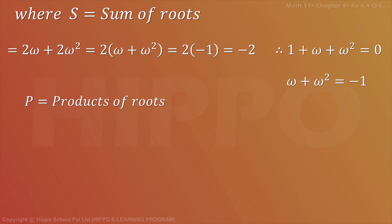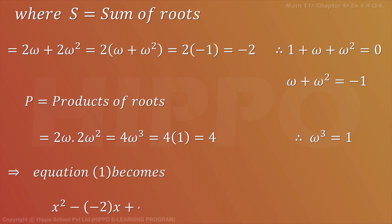P is the product of roots. 2 omega times 2 omega square equals to 4 omega cubed. When we multiply, the powers add, so omega to the power 3. We know that omega cube equals to 1, which gives us 4.